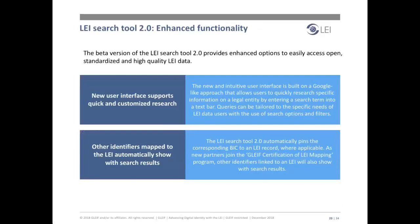Thank you, Claire. The beta version of the LEI search tool 2.0 will be launched in December 2018. It provides enhanced options to access open, standardized, and high-quality LEI data. Market participants can use the tool to easily explore information on all organizations contained within the public LEI data pool. Version 2.0 provides enhanced functionality, including the option to identify corporate ownership structures or pinpoint other identifiers that have been mapped to an LEI. Anybody can access and search the complete LEI data pool free of charge and without the need to register, using the web-based LEI search facility. Similar to a sophisticated, easy-to-use search engine, it empowers users to quickly find LEI data without any technical restrictions.